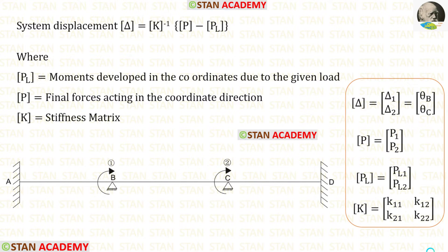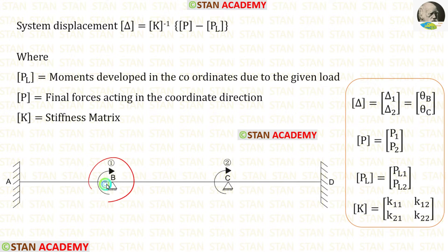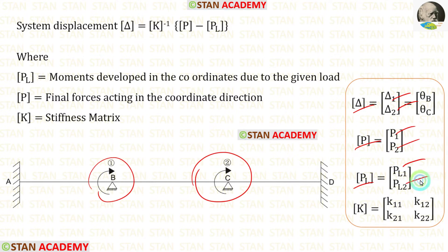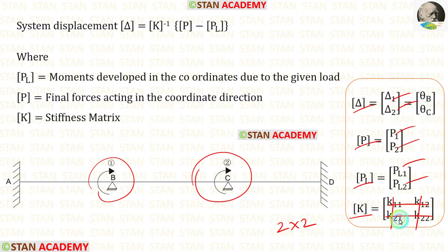Let us see the formula to find the slope values: the delta matrix equals K matrix inverse times (P matrix minus PL matrix). In this analysis, there are two coordinates, so inside the delta, P, and PL matrices there will be two values each. The size of the stiffness matrix will be 2×2, meaning two rows and two columns.